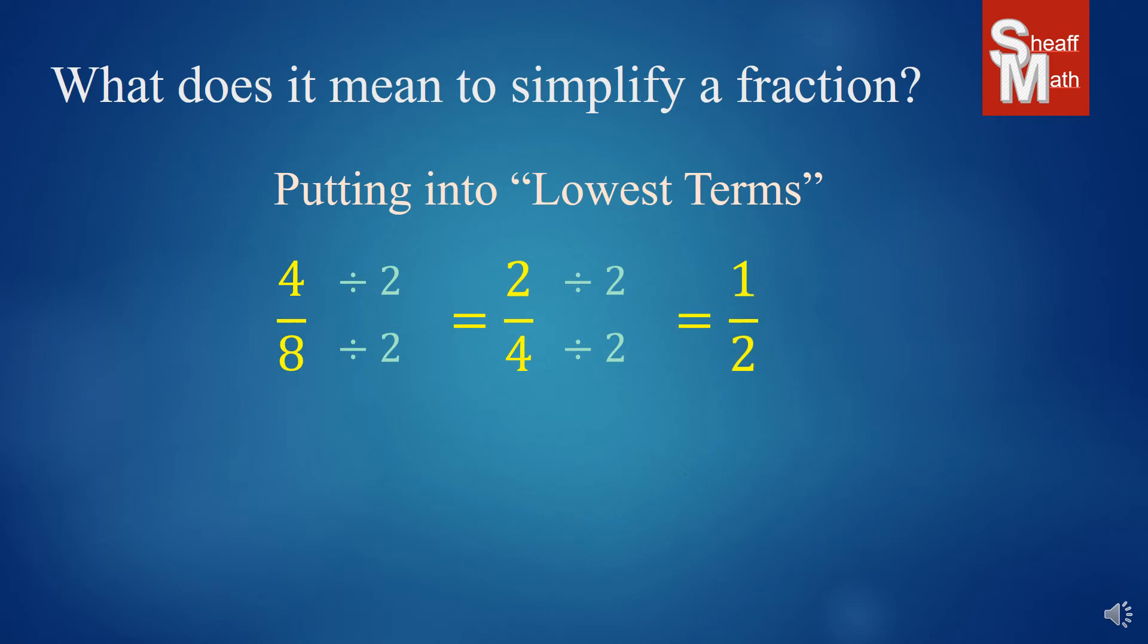Now, one over two cannot be simplified anymore. There's no number besides one that goes into both of those. And so you are done.